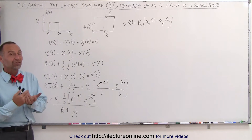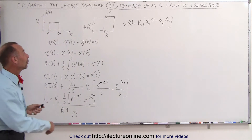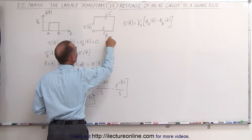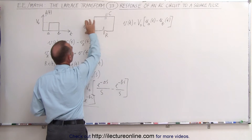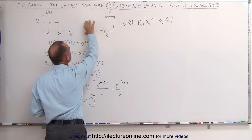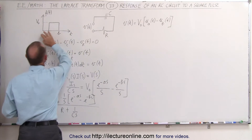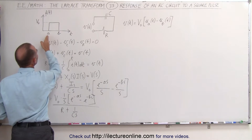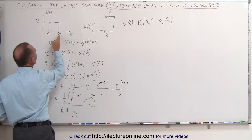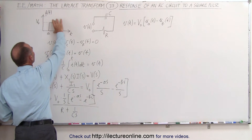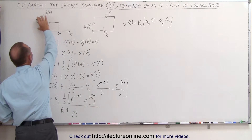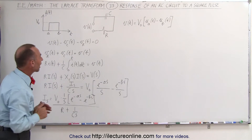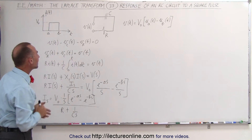Here we have a very simple circuit — an RC circuit with a single capacitor and a single resistor with a voltage input. The voltage input is a single square wave starting at T equals A and ending at T equals B.